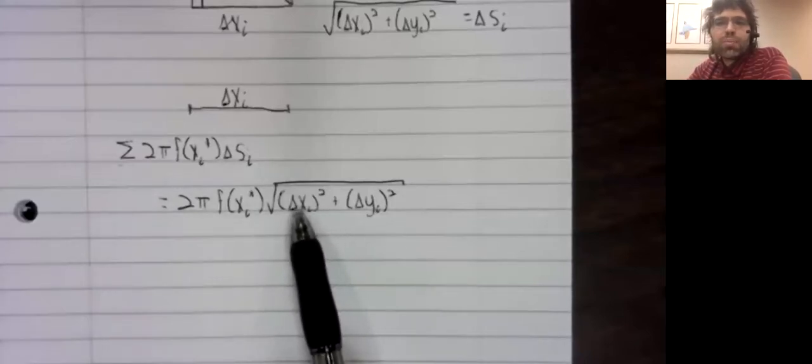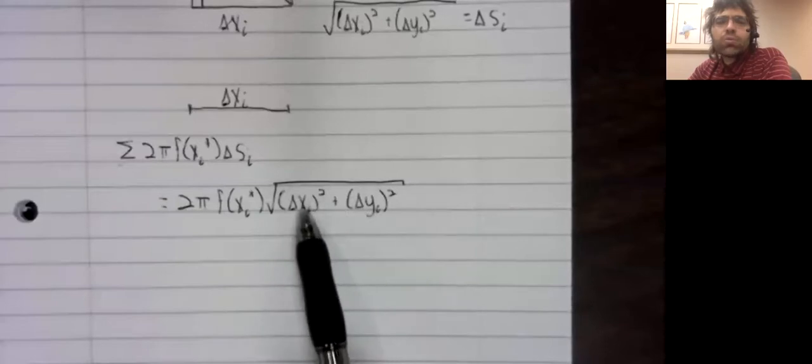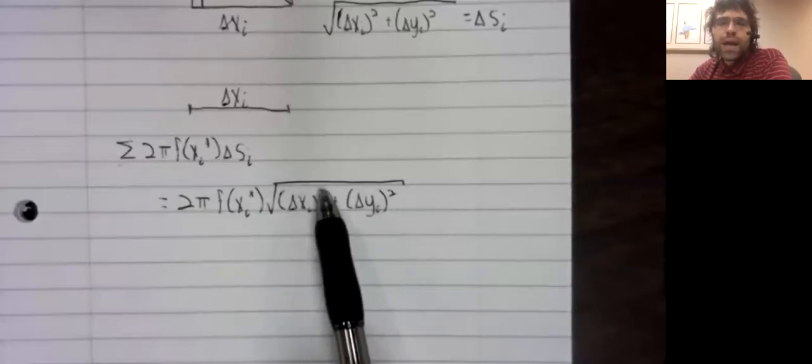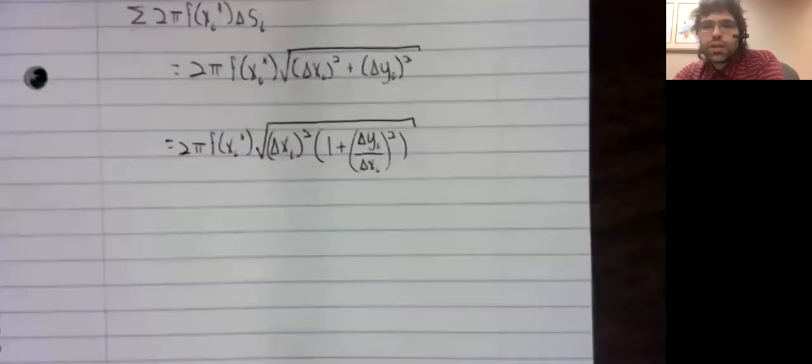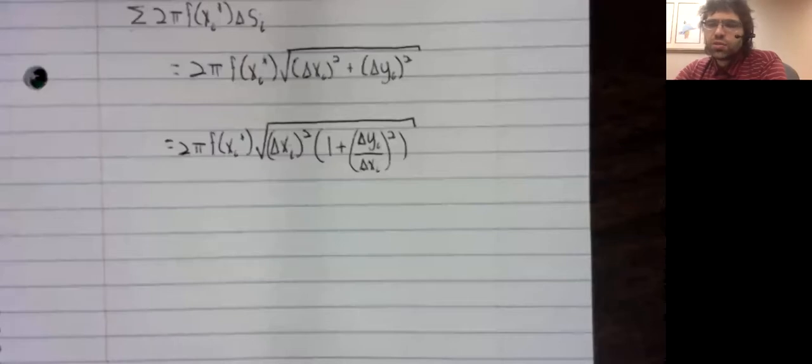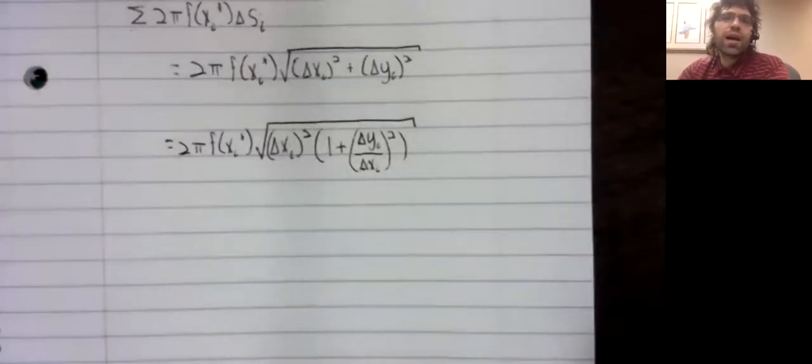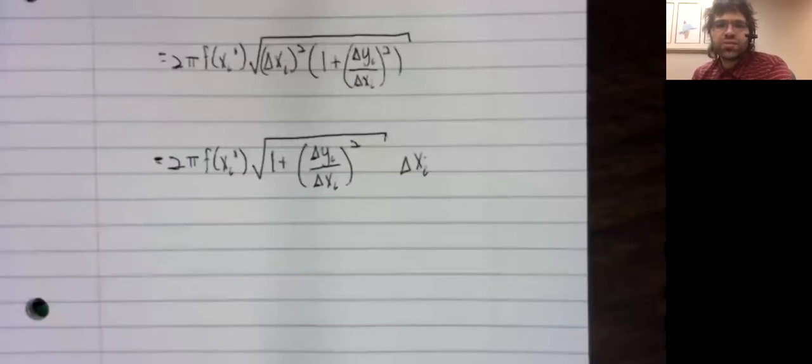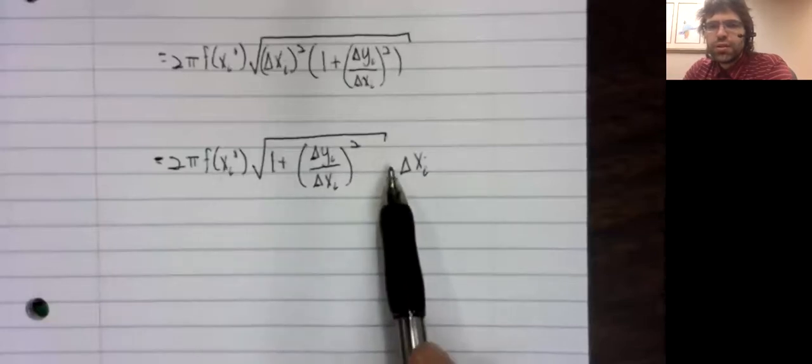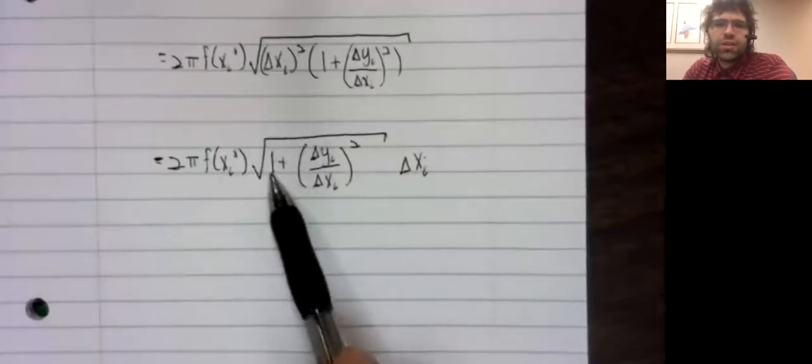So let's try to deal with that first bit of bad news first. Let's get this delta X sub i out of the square root. We'll start by pulling out a delta X sub i squared, I should say, from both of these terms. And once we've done that, we can take a square outside of a square root. That gives us this. And this has the form, or at least sort of the form of a Riemann sum. This is good.